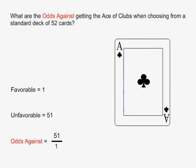In this example, what are the odds against getting the ace of clubs when choosing from a standard deck of 52 cards? There is only one ace of clubs in a deck, so the number of favorable cases is equal to 1. There are 51 other cards that are not the ace of clubs in the deck, so the number of unfavorable cases is equal to 51.